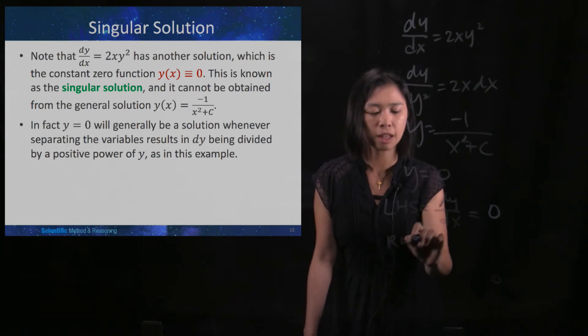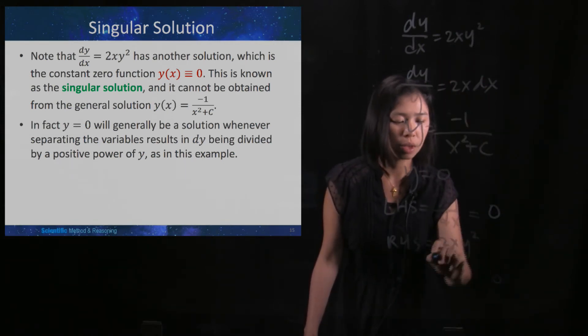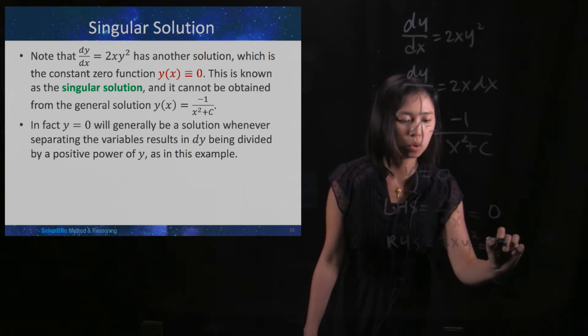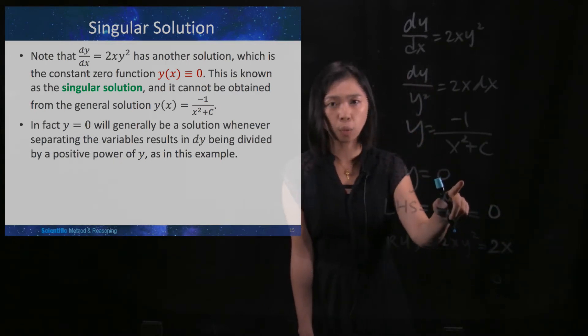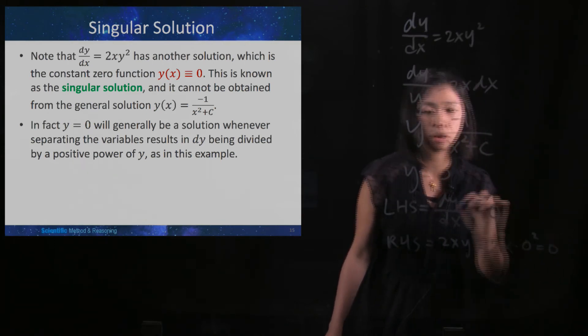And then your right-hand side is 2xy². So 2xy² is 2 times x. Right now, your y is 0, so you times 0 squared, which is also 0.